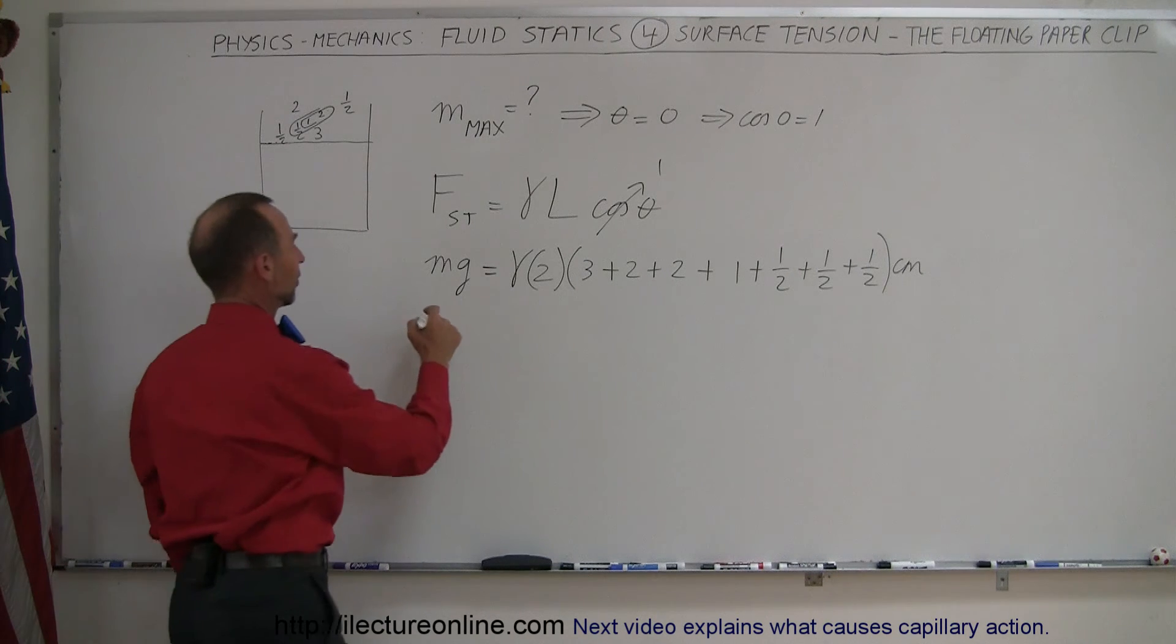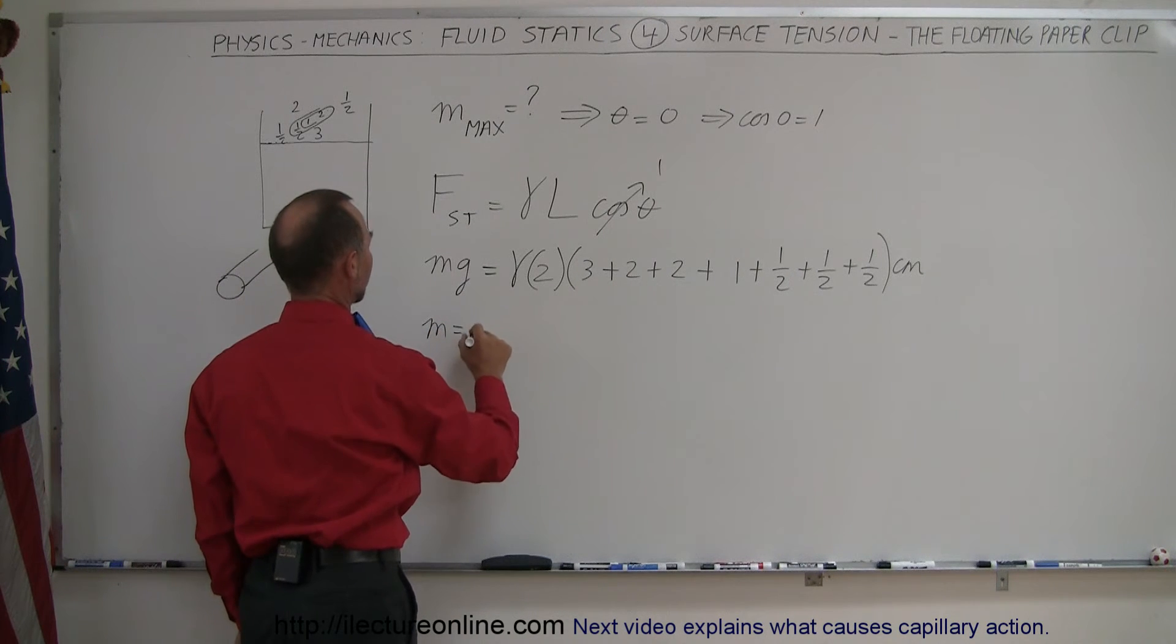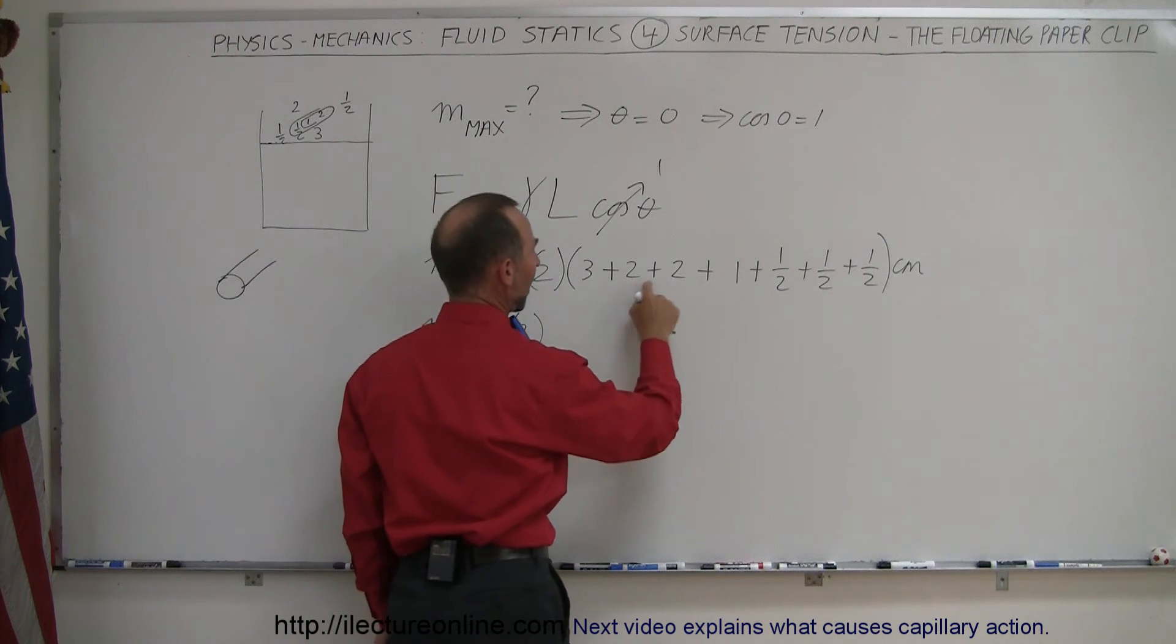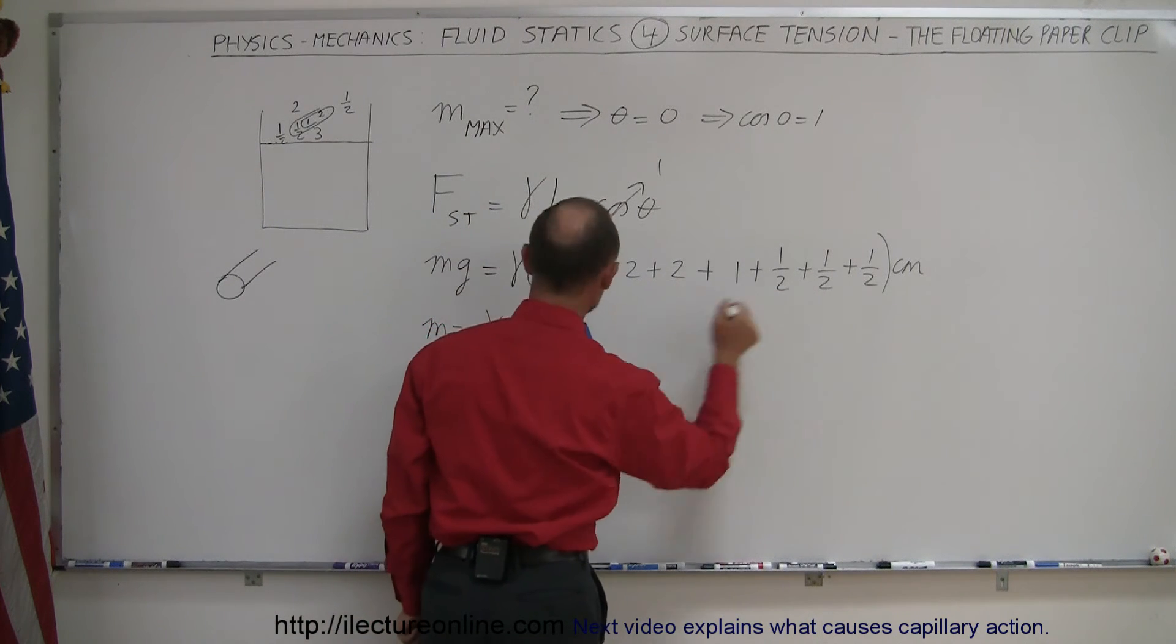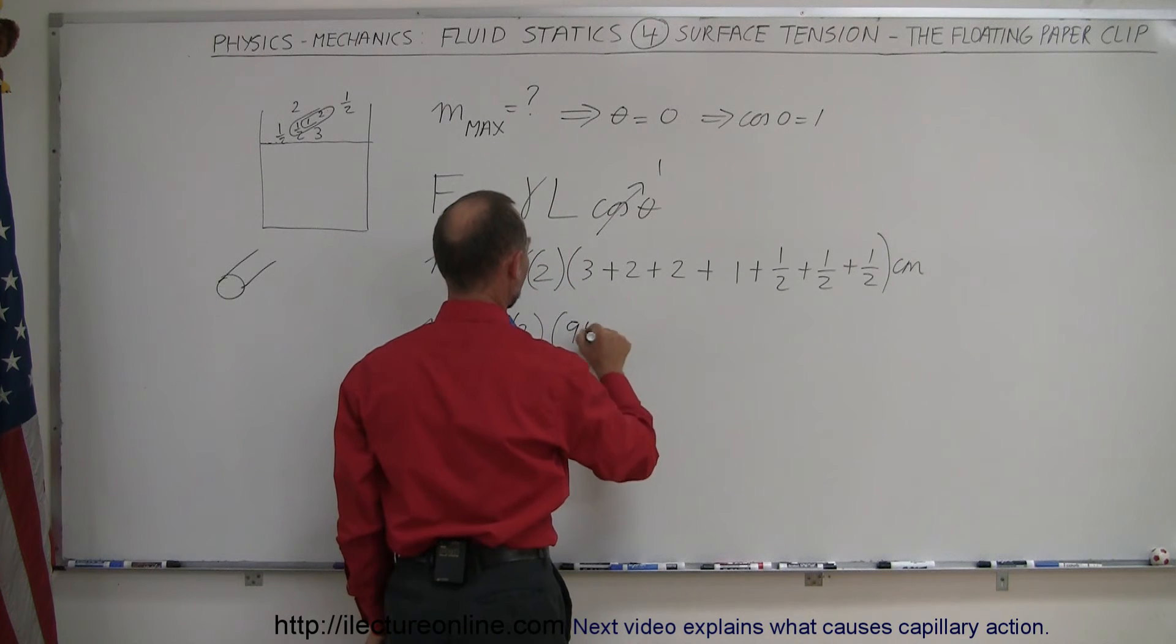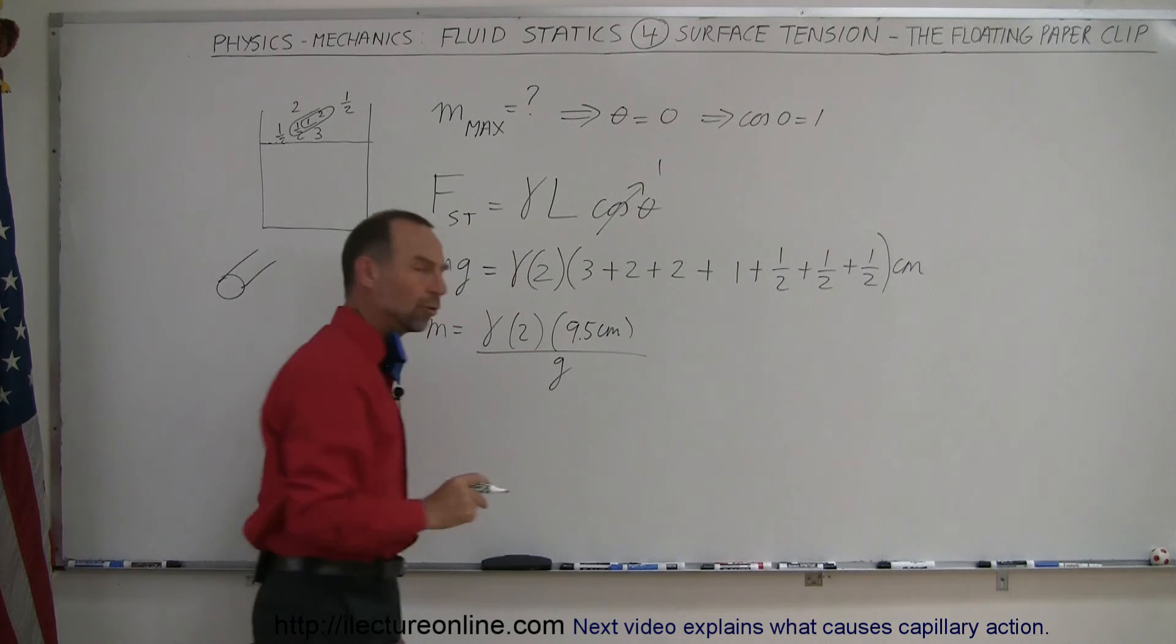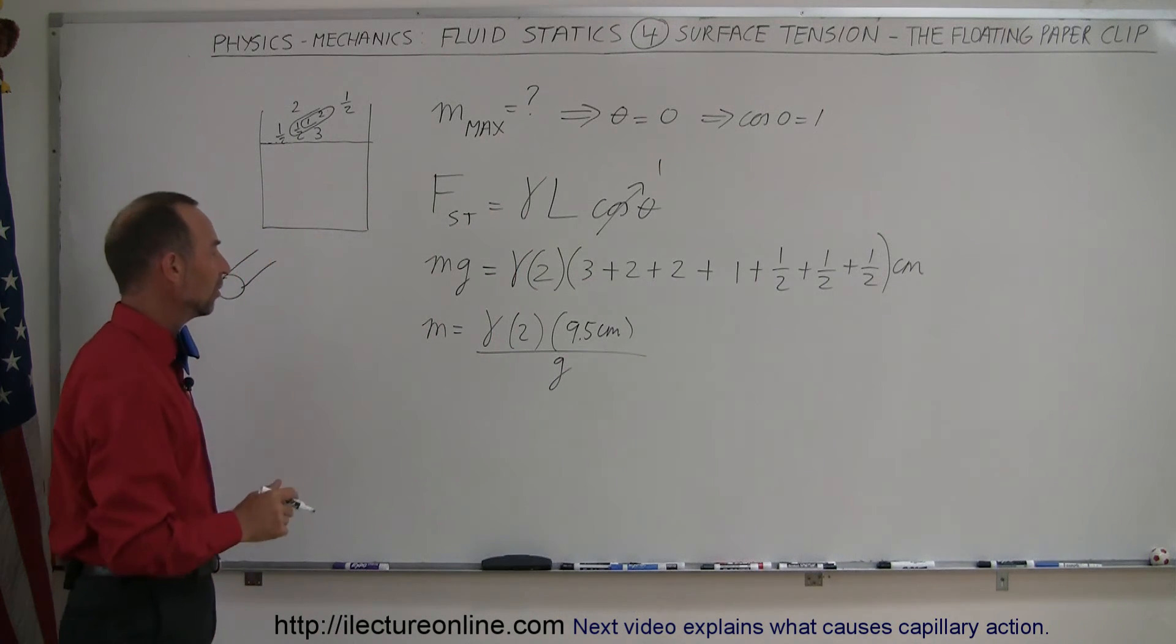Now, since we're looking for the mass, that would be mass is equal to gamma times two times, let's add them all up, three plus two is five, seven, eight, nine and a half centimeters, 9.5 centimeters, and then the whole thing divided by G, and again, let's do that in CGS units, centimeters, grams, and seconds.